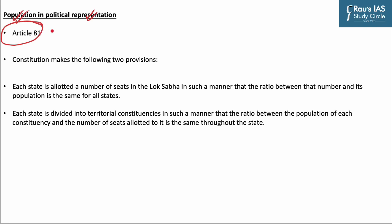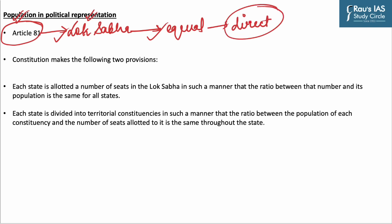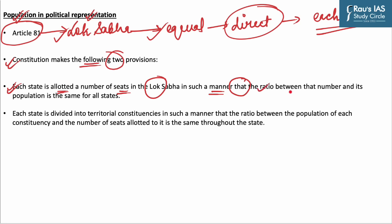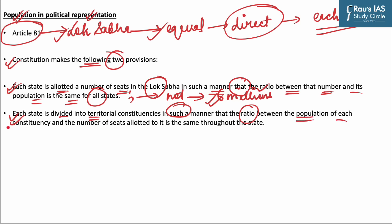Article 81 of the Indian Constitution stipulates that Lok Sabha constituencies should be equal by size of population. For direct elections to the Lok Sabha, each state is divided into territorial constituencies. The constitution makes two provisions: first, each state is allotted seats in Lok Sabha such that the ratio between that number and its population is the same for all states, though this does not apply to states with a population of less than 6 million. Second, each state is divided into territorial constituencies such that the ratio between the population of each constituency and seats allotted to it is the same throughout the state.